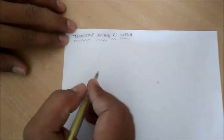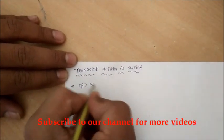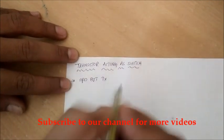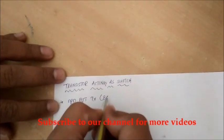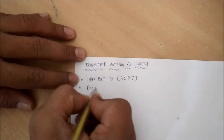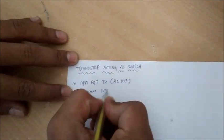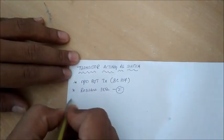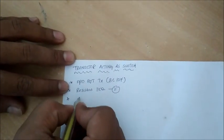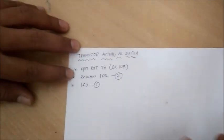Hi everyone, today we'll see how a transistor acts as a switch. For this we require a few components: one NPN BJT transistor BC 107, two 1 kilo-ohm resistors, and one LED. First we'll see how the circuit looks like.